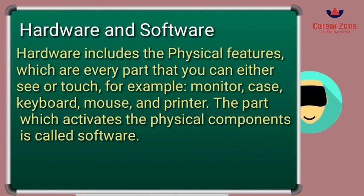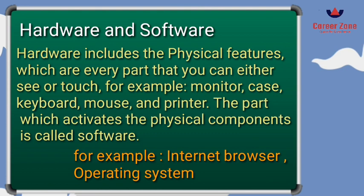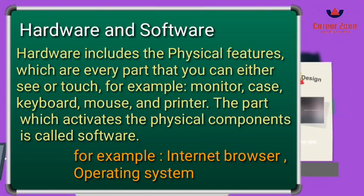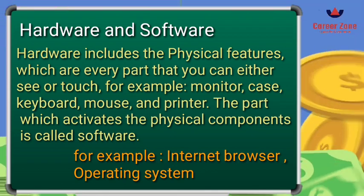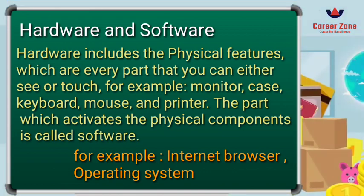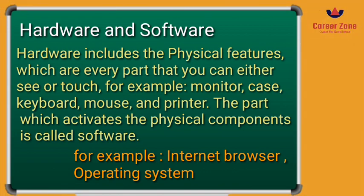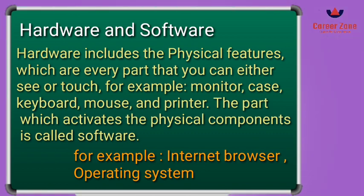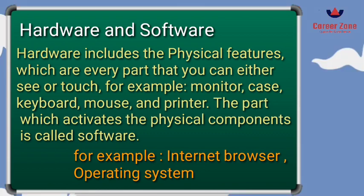Any physical device — monitor, mouse, keyboard — is called hardware. Software can be any application installed on your computer, like an internet browser, operating system, word processing software such as Word, Excel, or PowerPoint, or designing software like Adobe Photoshop. For example, if I want to give a print command, I will open a word processing document, write a document, give a print command, and that command will activate the printer to produce a printout. Both hardware and software work together to help us perform our tasks.